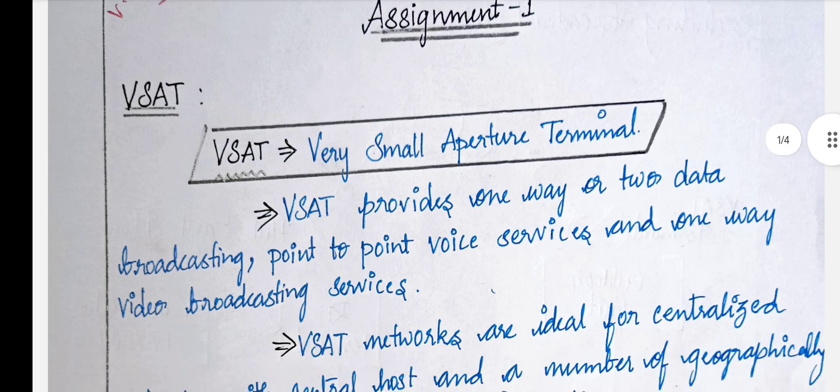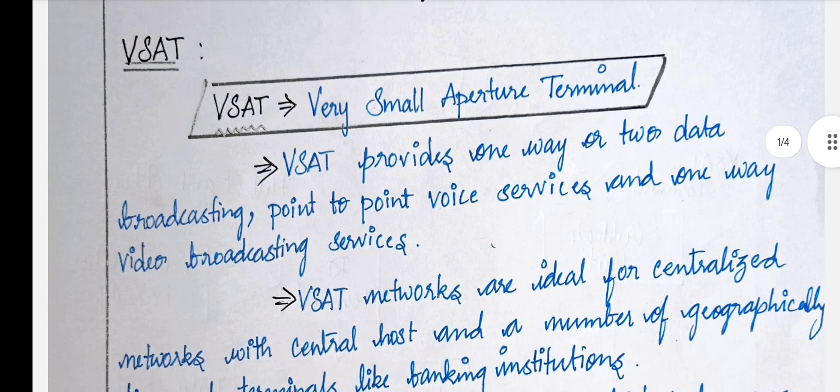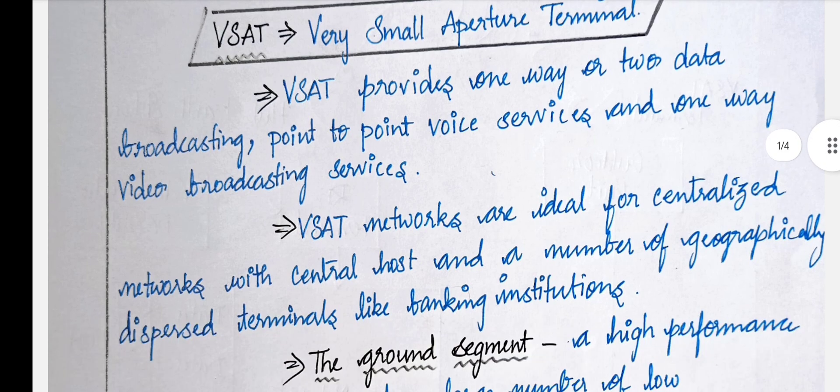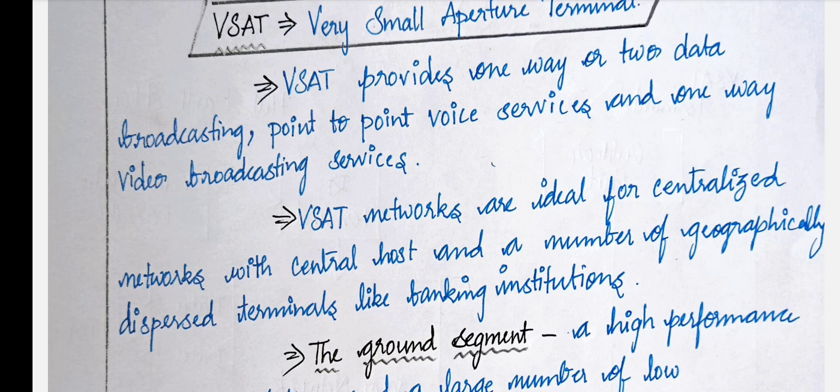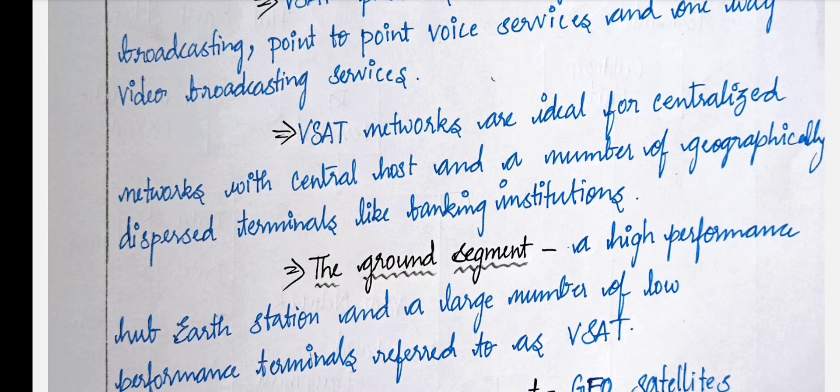VSAT normally stands for Very Small Aperture Terminal. VSAT provides one-way or two-way broadcasting, point-to-point, voice services, and one-way video broadcasting services. VSAT is a data broadcasting from point-to-point service. It is a centralized network with a central host and a number of geographically dispersed terminals.